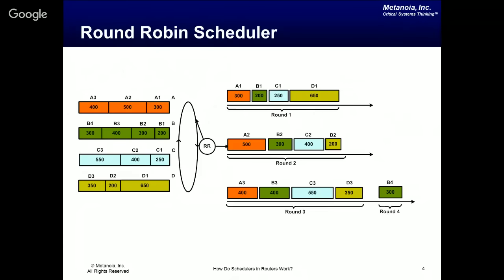A round-robin scheduler simply serves queues A, B, C, D in round-robin order — picks a packet from A, then one from B, then one from C, then one from D. Using the same initial queue configuration, we go down the list in round-robin order in round one. At the end of round one, we go back and pick the next packet from each queue in round two and three. After round three, A, C, and D are empty so there's only one packet left in QB to serve. If a queue is empty, the scheduler just skips it.